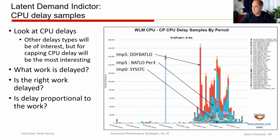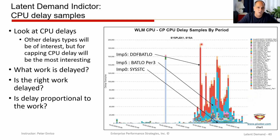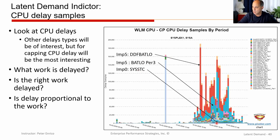One could argue that I have this peach color here for some sort of discretionary workload — why doesn't that have more delay samples? Probably because the demand on the CPU is not that great. Don't think because there's a low number of samples here that this guy's not suffering. It's just that his demand is a whole lot less than these other guys that are suffering a lot more. Notice here that one of the highest dispatching priorities in the system — sysSTC — is still going to get CPU delayed. Don't be concerned. We just want to make sure that the majority of delay is due to the lower importance workloads.